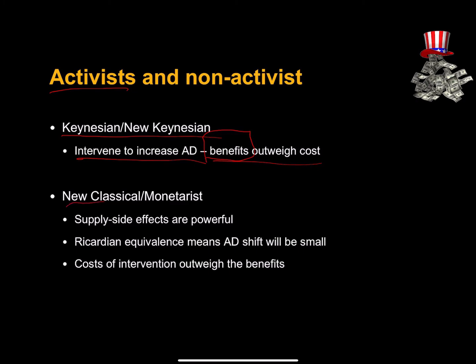On the other side, the new classical or monetarist economists — the non-activists — suggest that supply-side effects are very powerful: increasing taxes will depress economic activity not just temporarily, but permanently. Ricardian equivalence suggests that any shift in aggregate demand from intervention will be small, so the costs of intervention outweigh the benefits. These economists recommend that policymakers keep their hands off and allow the shock to dissipate. This is a genuine debate in macroeconomics, and I hope this video helped you understand fiscal intervention to increase aggregate demand.